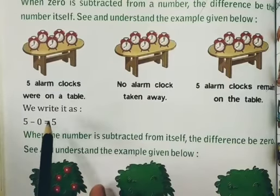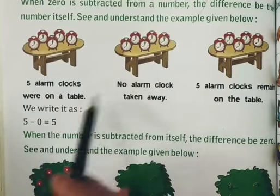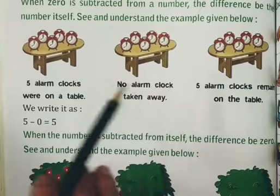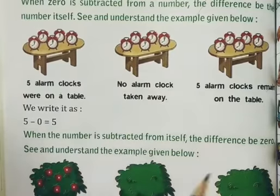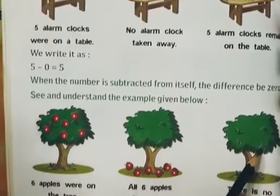5 minus 0 equals 5. Zero means nothing, so nothing has been subtracted. I hope the first example is clear to you.